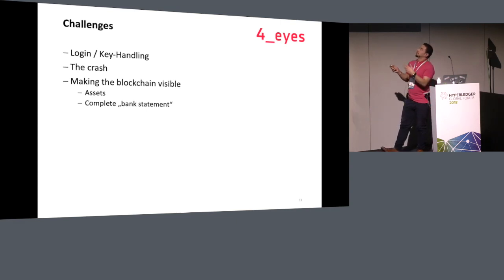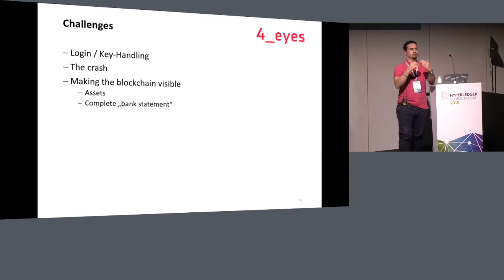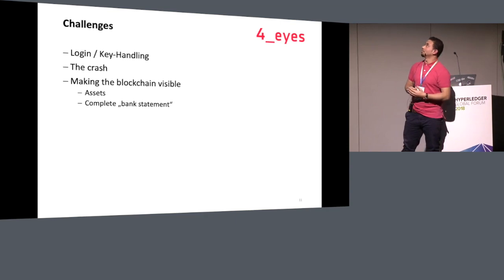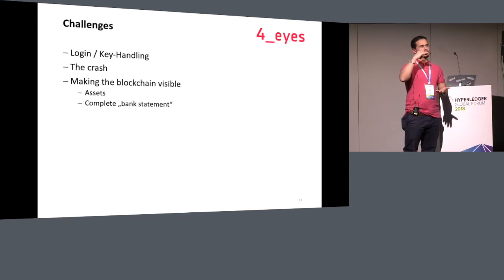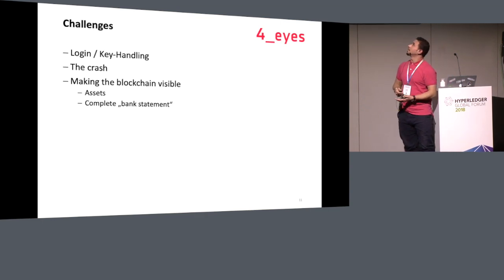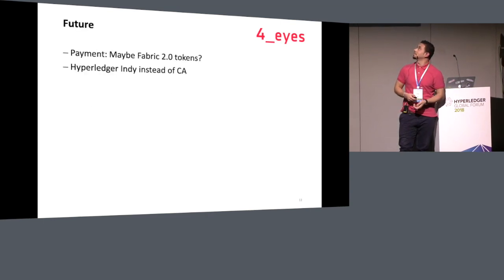We wanted to make the blockchain visible. We showed the history of assets, and I also wanted to make a bank statement for every user — to show them how many credits they got and how many they spent. I didn't have time to complete that yet. So that's something for the future.